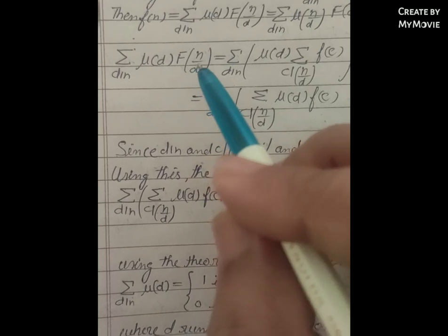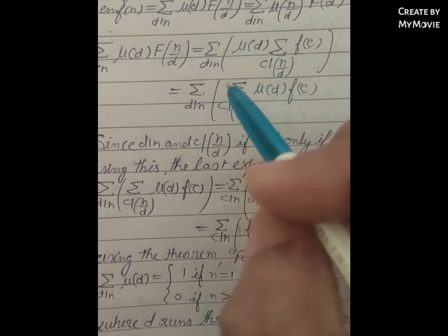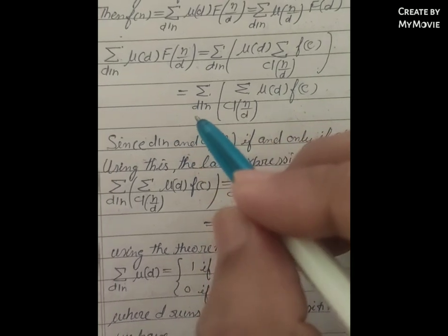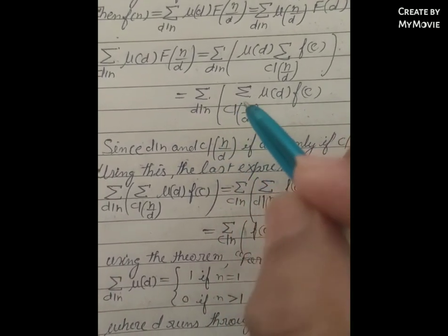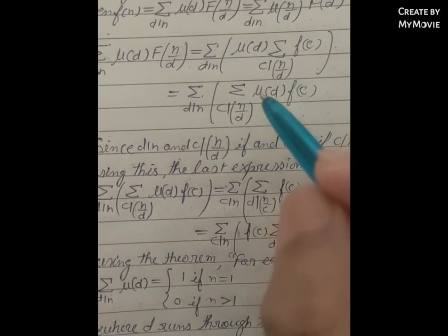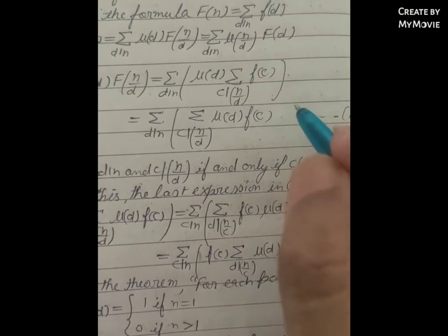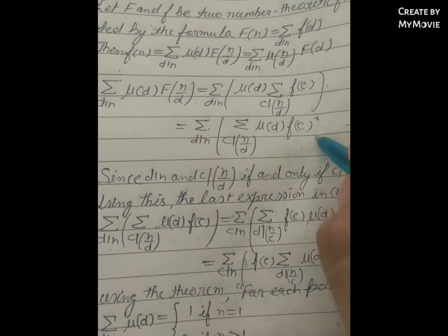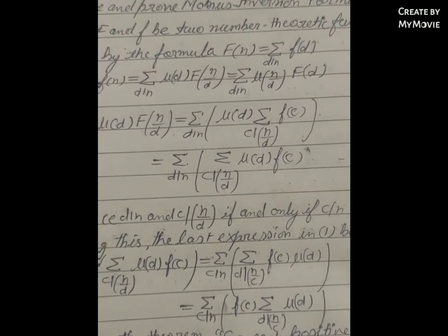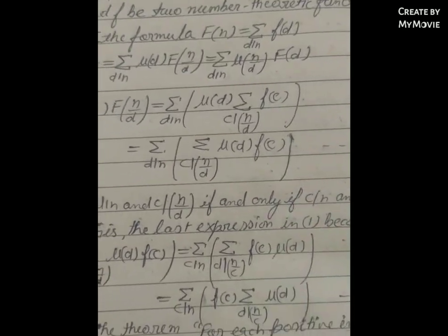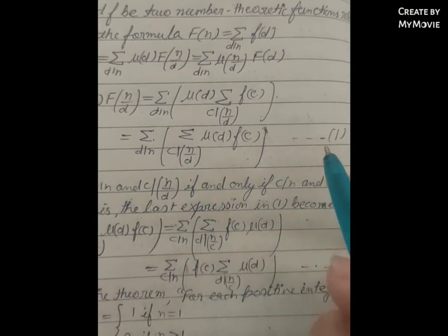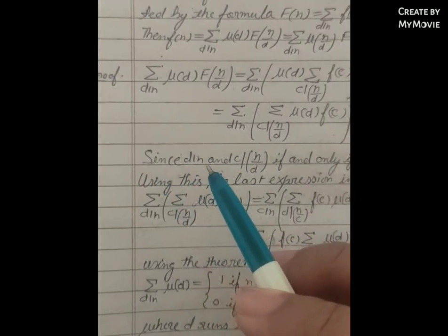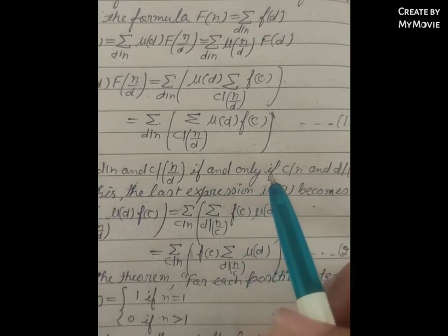Proof: Consider Σ_{d|n} μ(d) F(n/d). This equals Σ_{d|n} [ μ(d) · Σ_{c|n/d} f(c) ], which equals Σ_{d|n} Σ_{c|n/d} μ(d) f(c). Call this equation (1), since d|n and c|(n/d) if and only if c|n and d|(n/c).